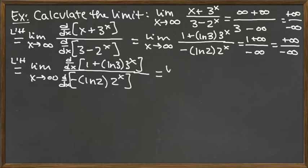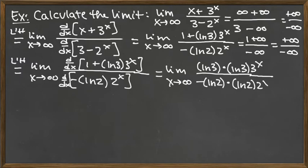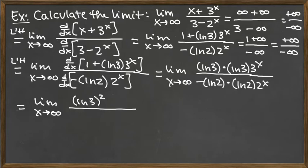So now we've got the limit as X goes to infinity. The derivative of 1 is 0, so we just have natural log of 3 as the constant multiple out front of the derivative of 3 to the X. The derivative of 3 to the X is natural log of 3 times 3 to the X. Likewise on the bottom, we've got negative natural log of 2 as the constant multiple in front of the derivative of 2 to the X, which is natural log of 2 times 2 to the X. So what we're really looking at is the limit as X goes to infinity of natural log of 3 squared times 3 to the X on top, over negative natural log of 2 quantity squared times 2 to the X on the bottom.